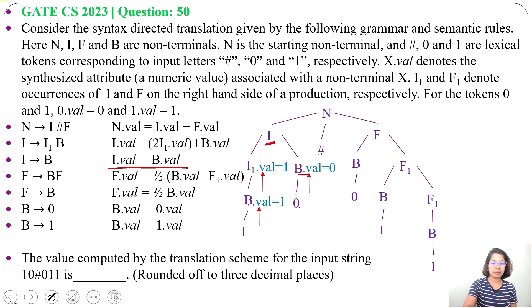Now, this I value will be I value equals 2 times I1 value plus B value. Here, what is I1 value? It's 1. So, 2 times 1 plus 0 is 2. So, this I value will be 2. We derive from I1 and B. The semantic rule is given. I value equals 2 times I1 value plus B value. So, I got I value equals 2.